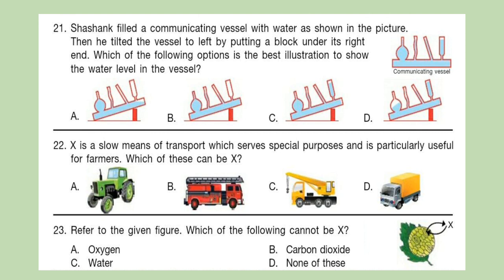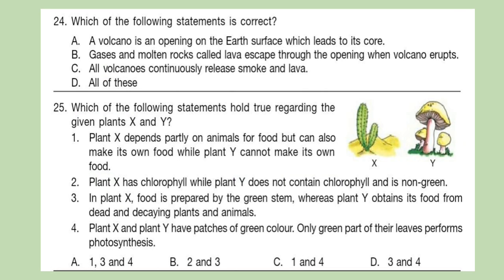Question 22: X is a slow means of transport which serves special purposes and is particularly useful for farmers. Which one of these can be X? Question 23: Refer to the given figure. Which of the following cannot be X? Question 24: Which of the following statements is correct? Think about your answer and write it down. Question 25: Which of the following statements hold true regarding the plants given X and Y? Here are the options, select your answer.